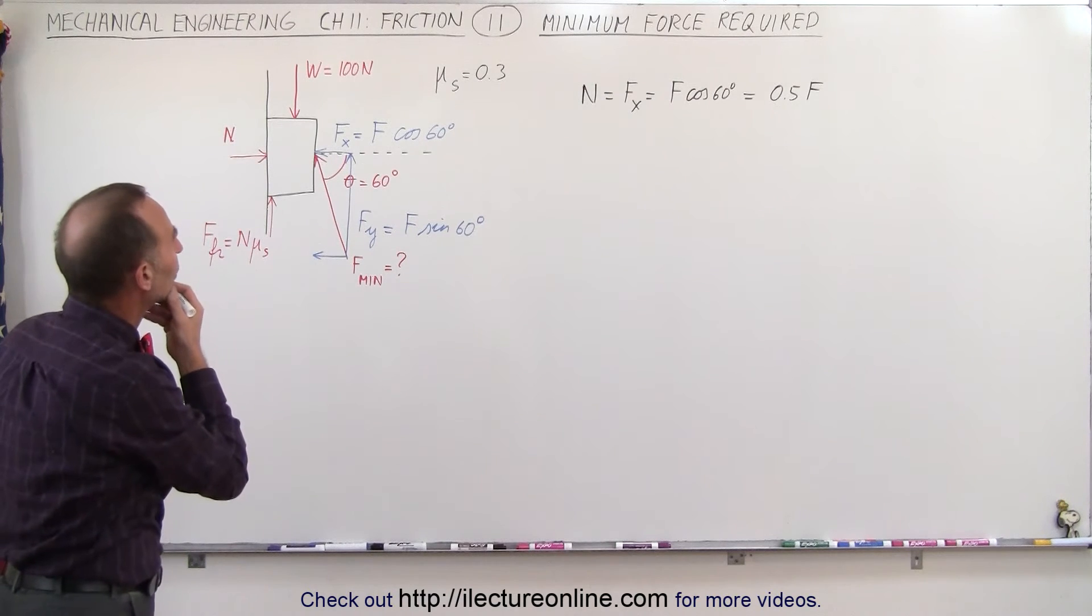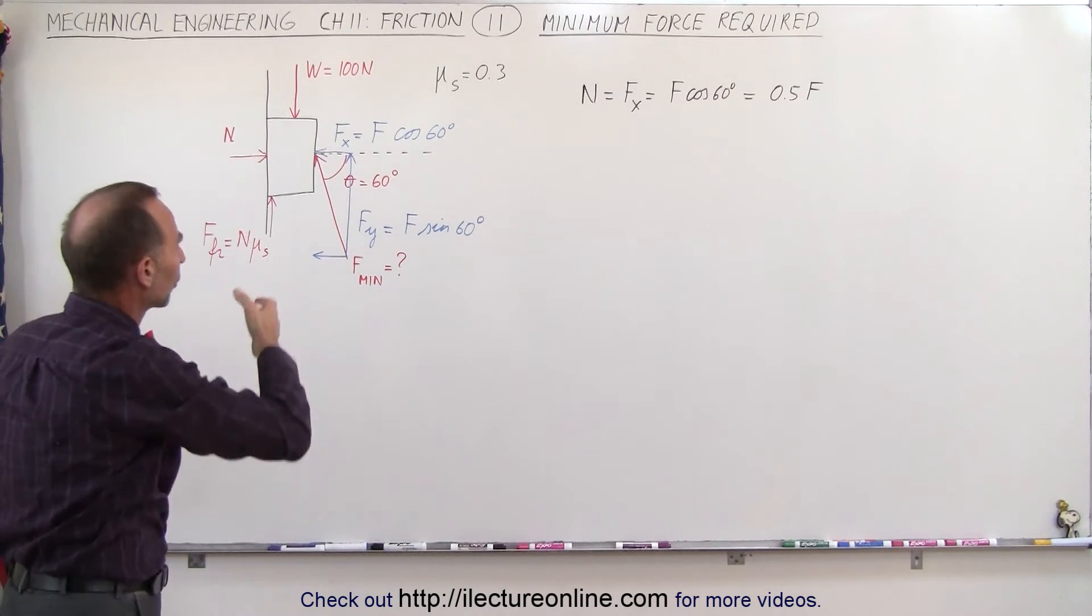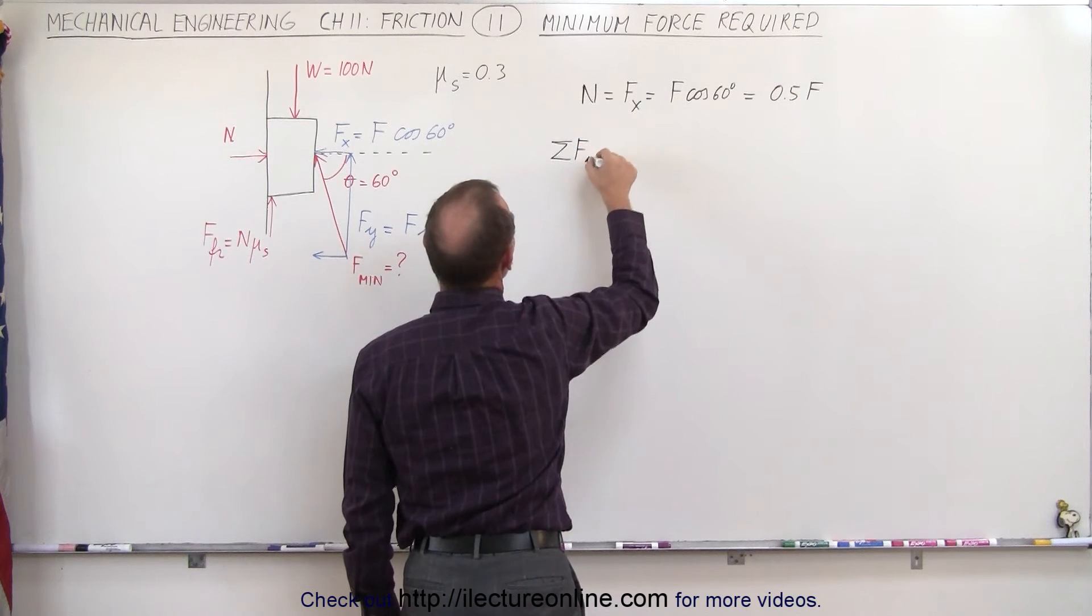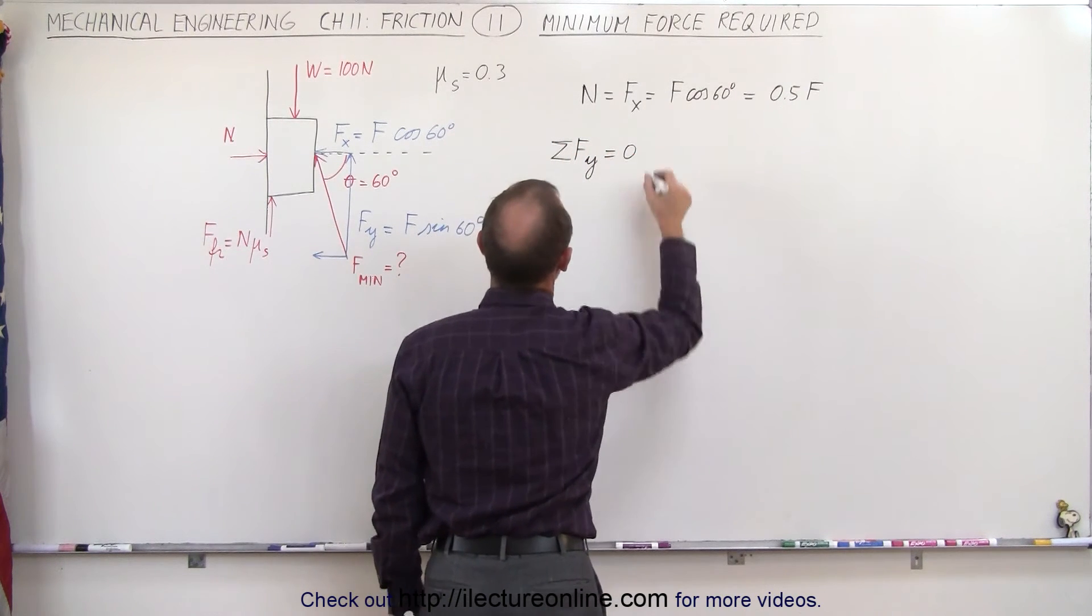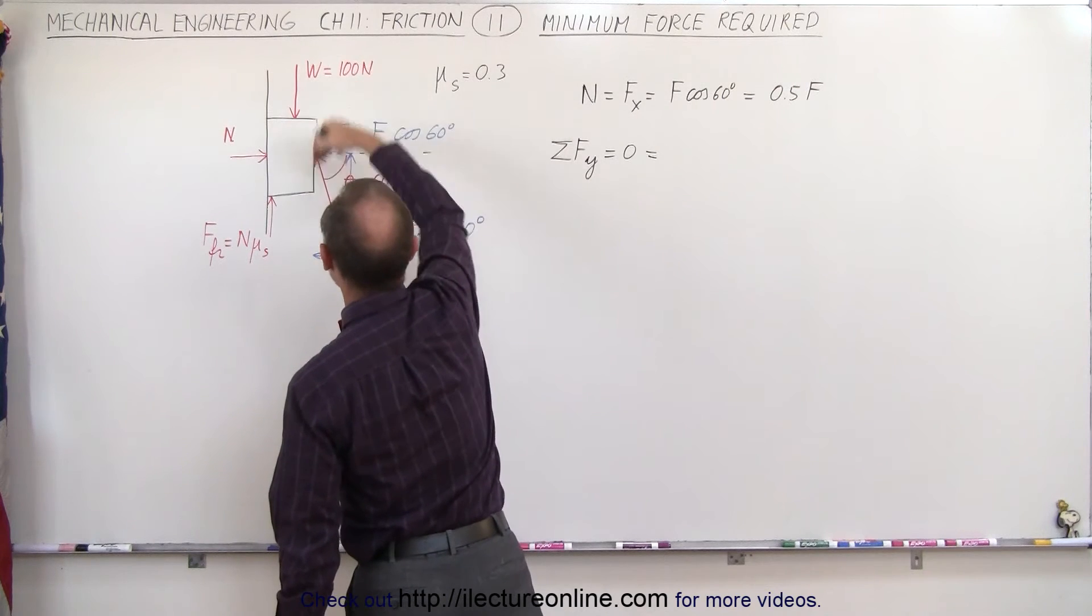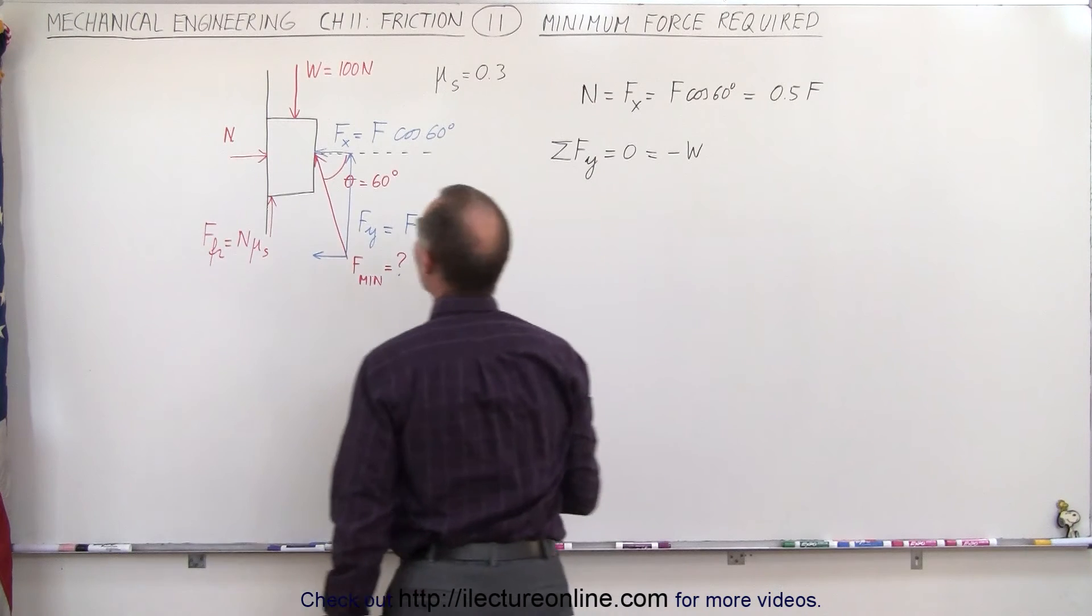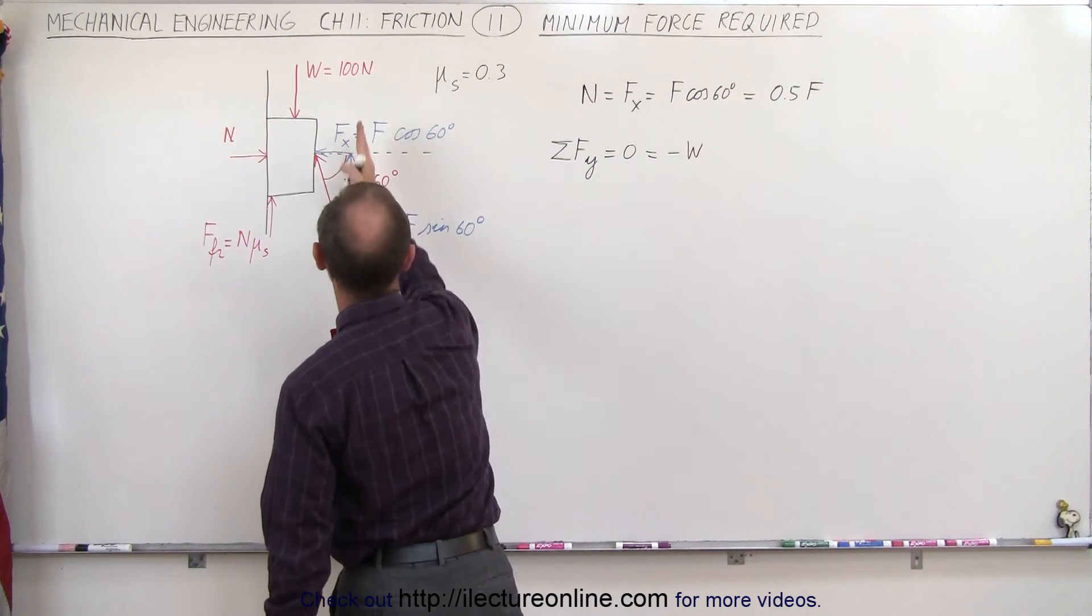So now what we're going to do is sum up all the vertical forces. The sum of all the forces in the y direction should add up to zero. Now we have the weight acting in the negative direction, so that's minus the weight...